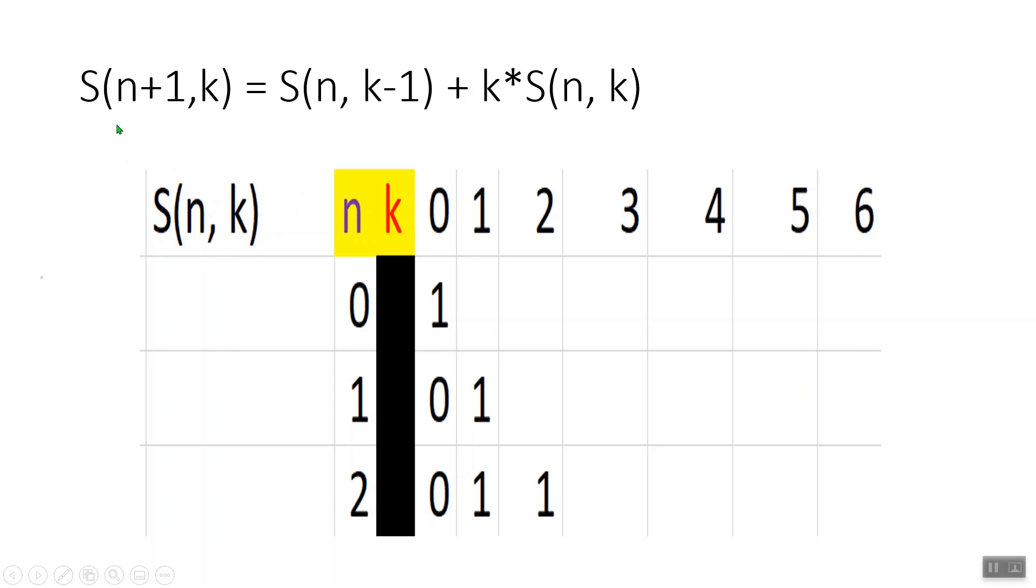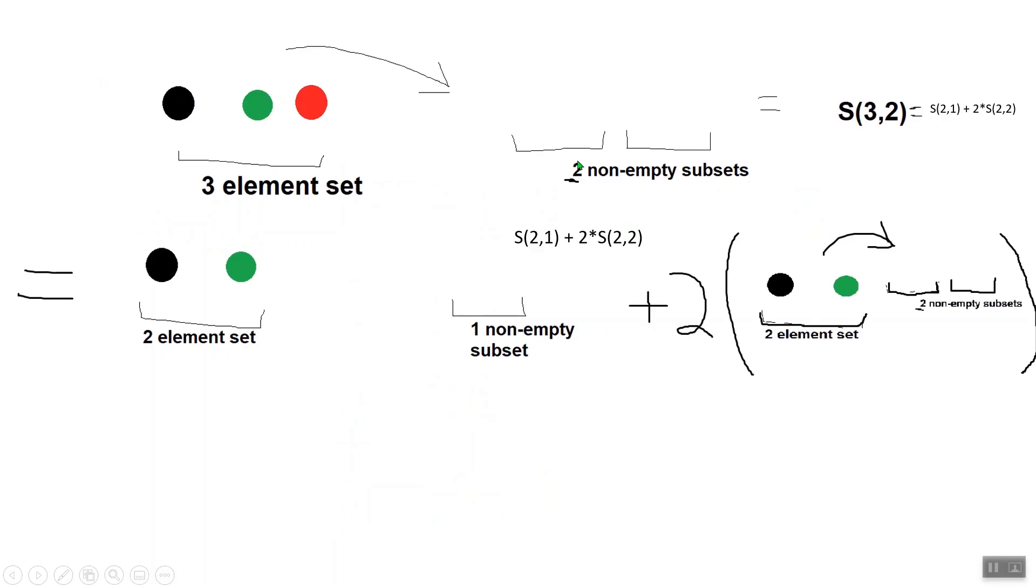For this video, we'll use a recursive formula shown above. What this means is that the number of ways to partition a set of, say, three elements into two non-empty subsets, or S(3,2), equals the number of ways to partition a set of two elements into one non-empty subset, plus double the number of ways to partition a two-element set into two non-empty subsets, or S(3,2) equals S(2,1) plus double S(2,2). Feel free to pause and think about why that is, and then I'll give you some intuition about this formula in a second.